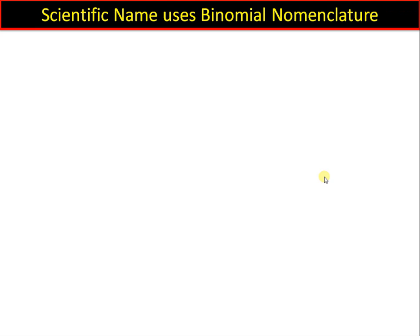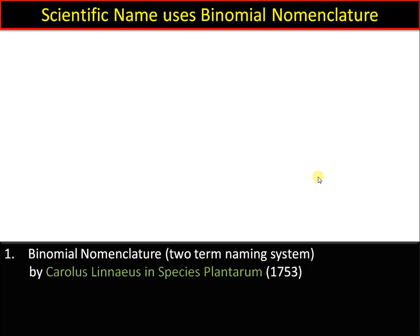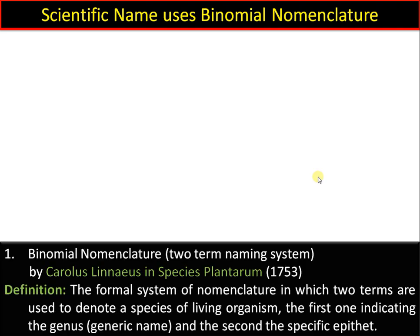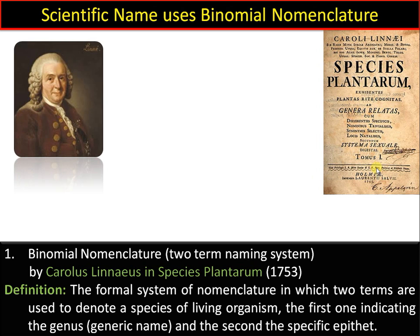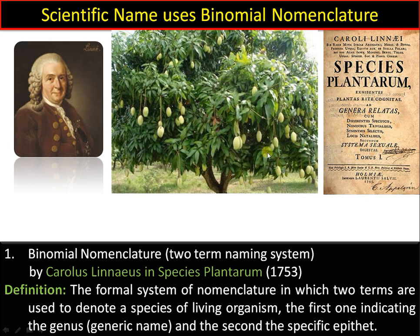Scientific names use binomial nomenclature, or a two-word naming system. It was proposed by Carlos Linnaeus, who used it consistently in his book Species Plantarum, published in 1753, and he is regarded as the father of modern taxonomy. Binomial nomenclature is a formal system of naming in which two terms are used to denote a species of living organisms.